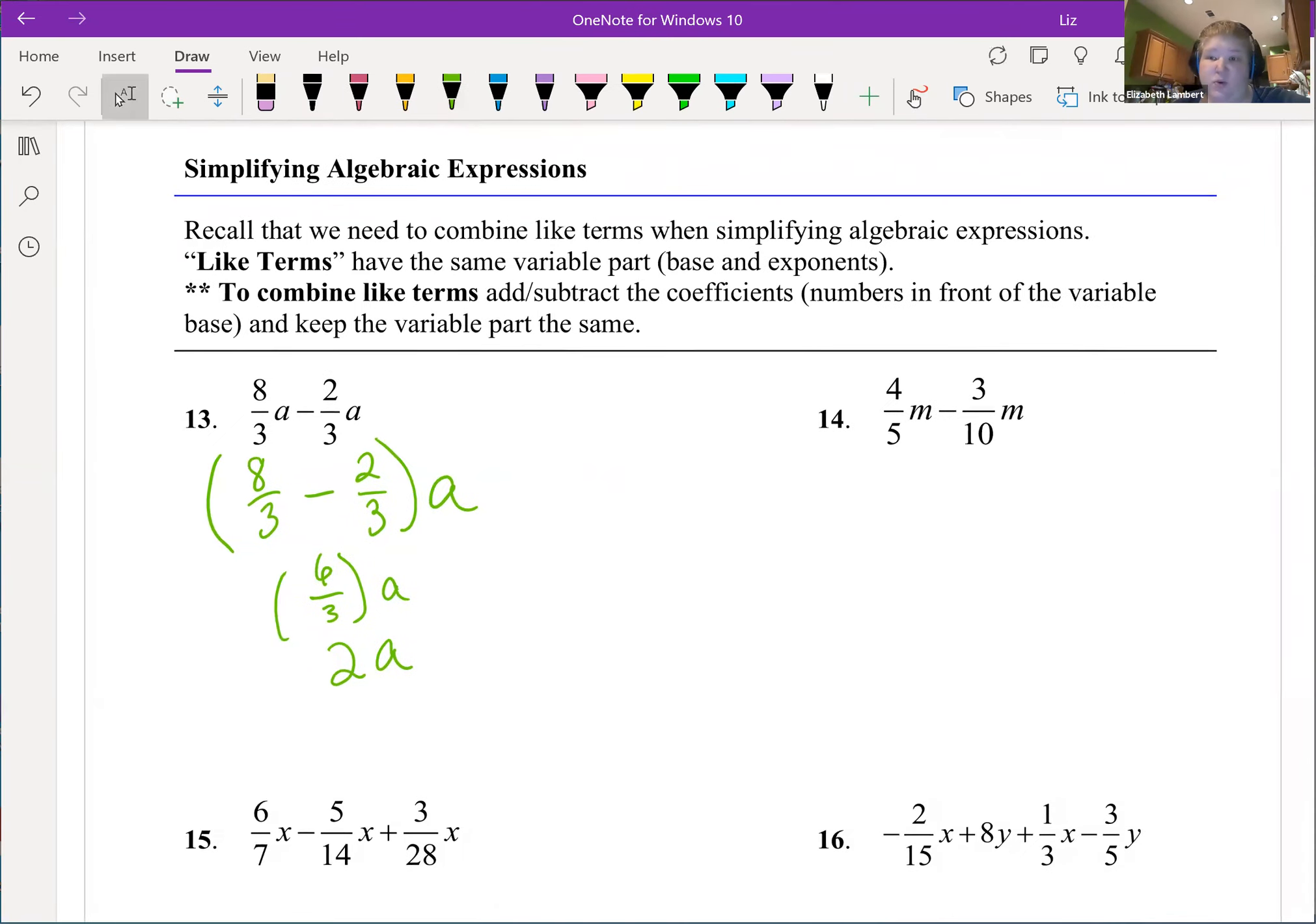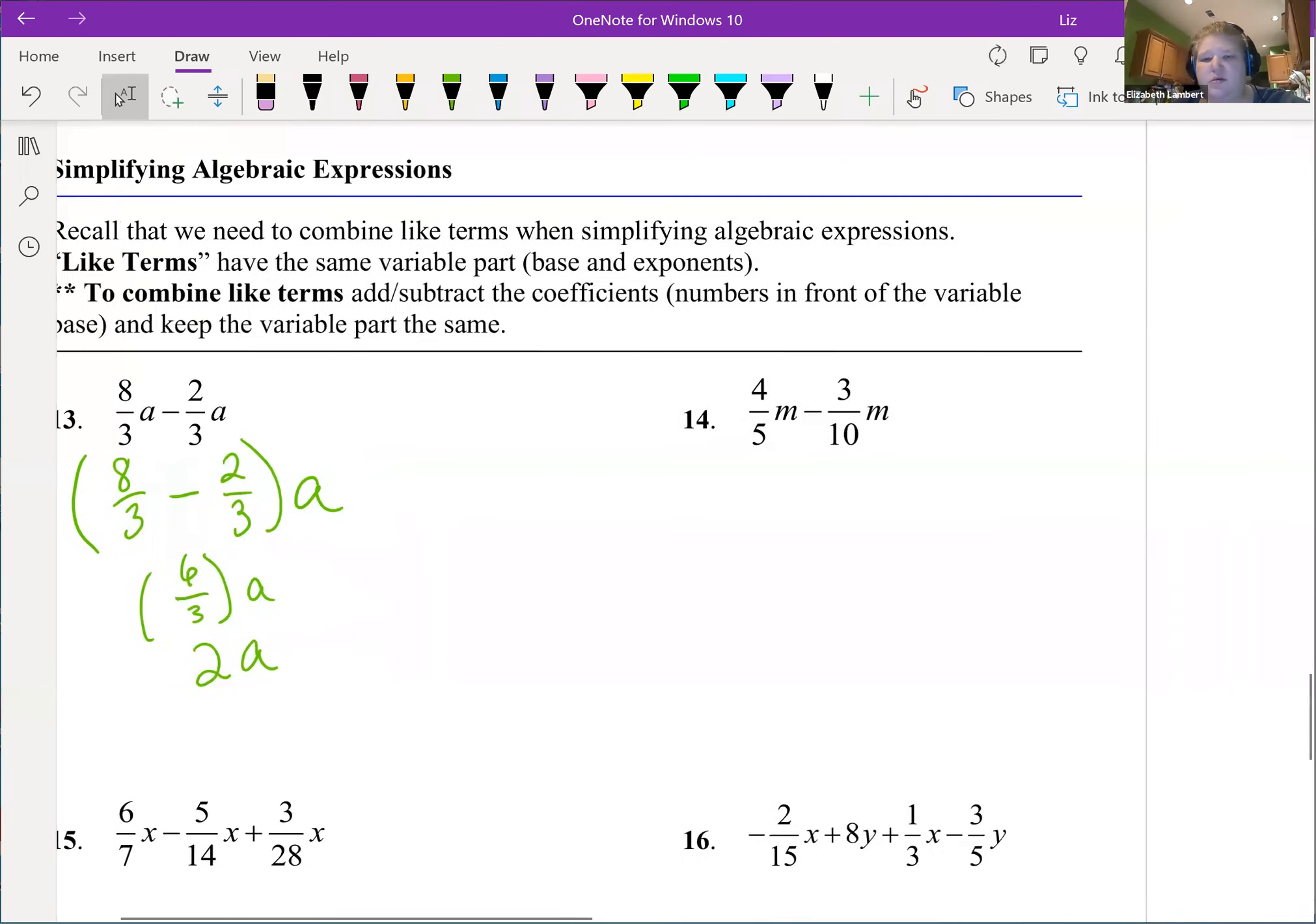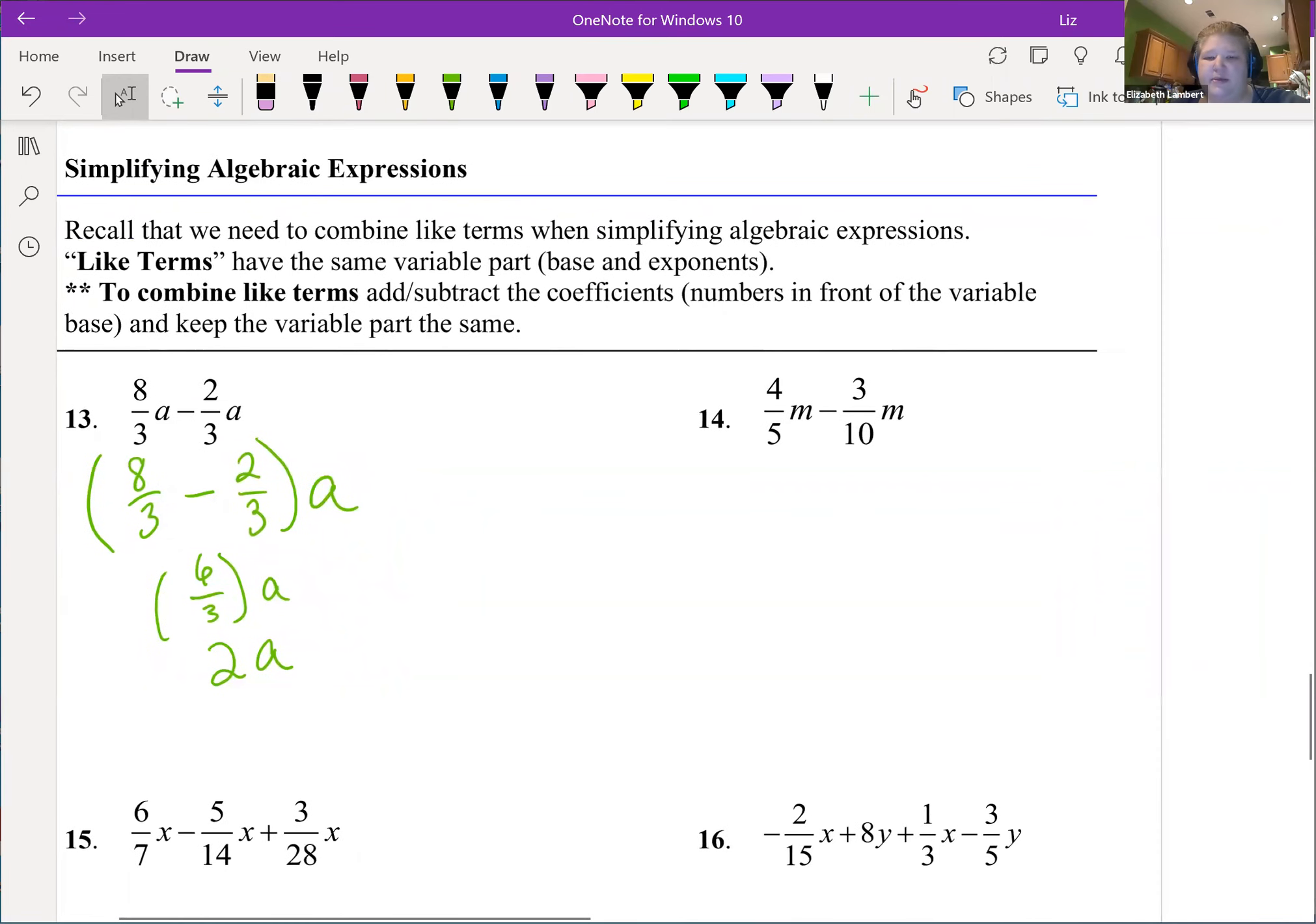But that's the behind the scenes what's going on and what gets skipped over a lot of the times. All right, four fifths of m minus three tenths of m. They both have an m, so we just have to deal with four fifths and three tenths. Luckily I can easily turn fifths into tenths by doubling, so this is eight tenths minus three tenths with that common m, so that is five tenths.